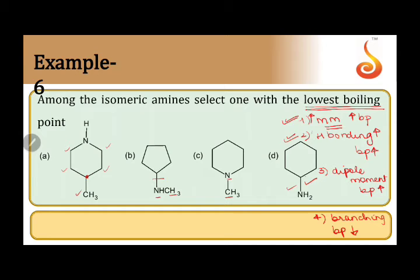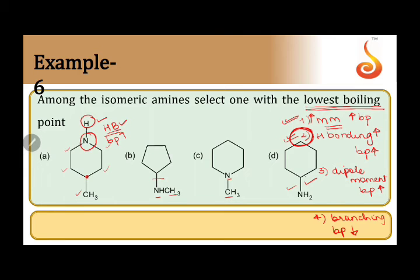To identify hydrogen bonding, we check whether a hydrogen is directly attached to an electronegative atom. The electronegative atom here is nitrogen. In option A, there is a hydrogen directly connected to nitrogen — so hydrogen bonding is present, meaning the boiling point is high. In option B, we also see a hydrogen attached to nitrogen, so hydrogen bonding is present and boiling point is high.